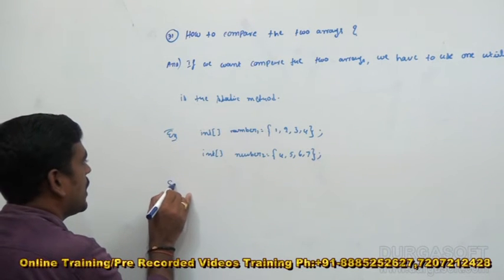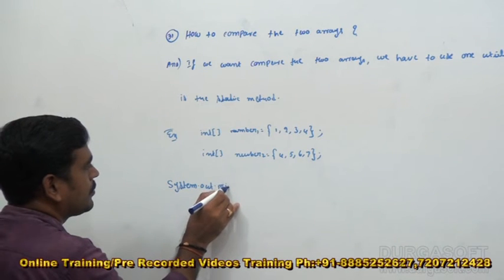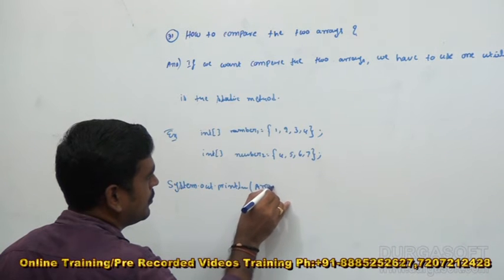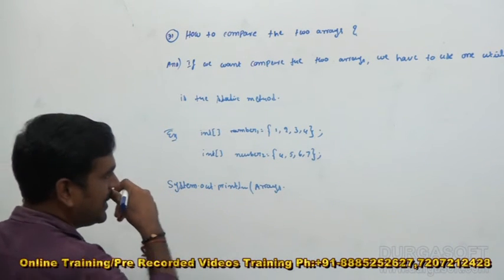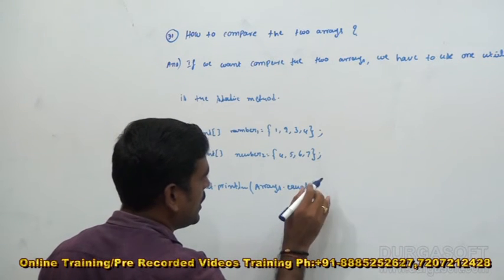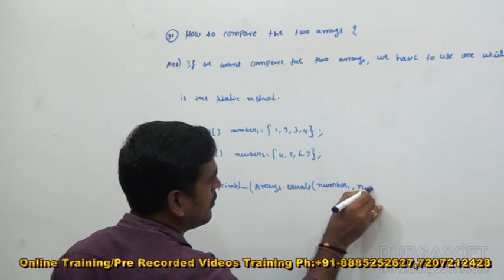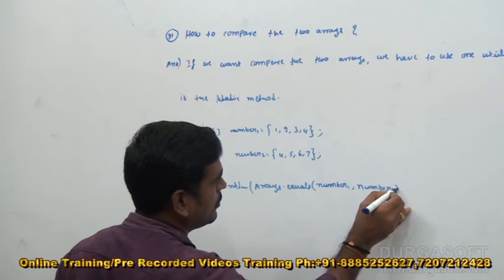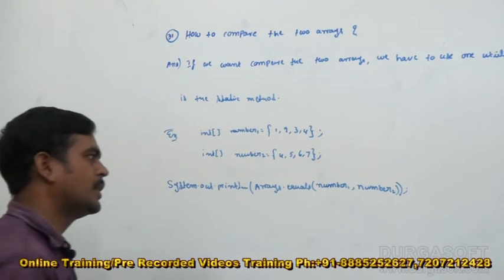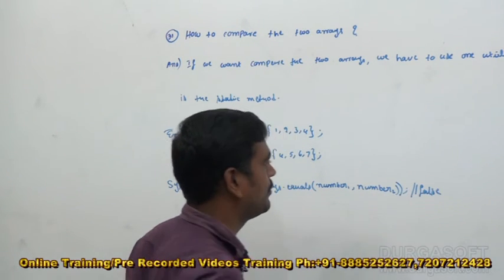After that, what we have to do: System.out.println(Arrays.equals(num1, num2)). When we are compiling and executing this application, we are going to get an output of false.